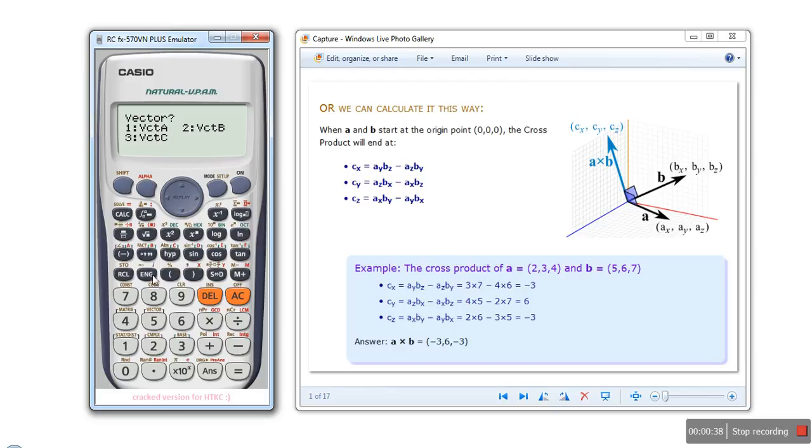And second in vector B. So we are going to enter the first vector, we will select vector A. This will be the dimension - we have a three-dimensional vector, so we will select three by pressing one.